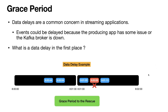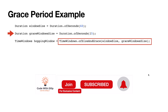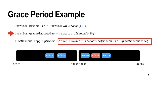Let me show you how to define a grace period and how it impacts the windowing logic. You have the actual window size followed by the grace window size, and you use the function `TimeWindows.ofSizeAndGrace()`, passing both window sizes. In this case if the delayed event comes within the 15-second grace window, that event will be considered part of the actual window it needs to belong to. This is how the grace period works.